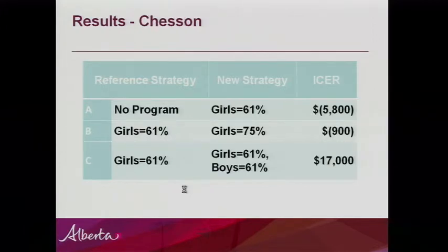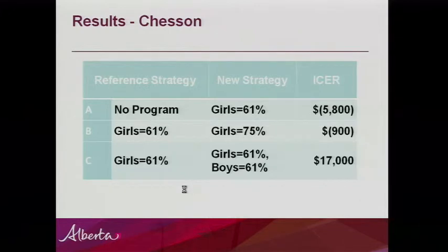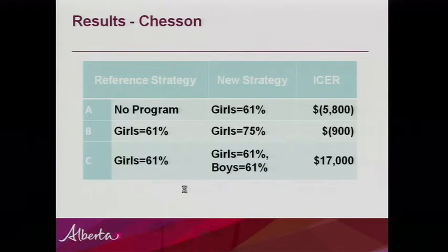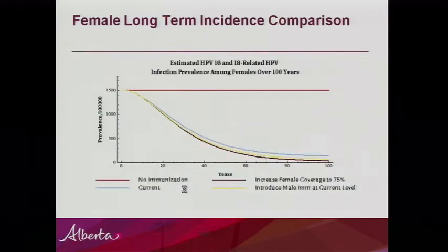The Chasson model was generally more cost-effective than the Merck model. Comparing no program to introducing girls — the current program — was cost-saving. Increasing coverage in females was also cost-saving. Introducing boys was not cost-saving but cost-effective at $17,000 per QALY. In a more formal analysis, we would also vary the price and other parameters to see how results move with those changes.